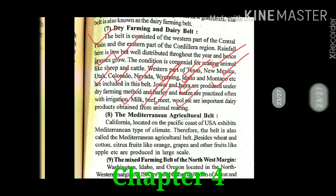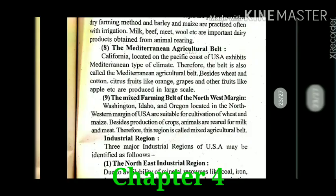The next belt is the Mediterranean agricultural belt. On the western side of the USA, along the Pacific coast, California has a Mediterranean type of climate. As we know, Mediterranean climate is good for fruit cultivation. Fruits like oranges, grapes, and apples are produced here on a very large scale. In addition, wheat and cotton production also takes place here.